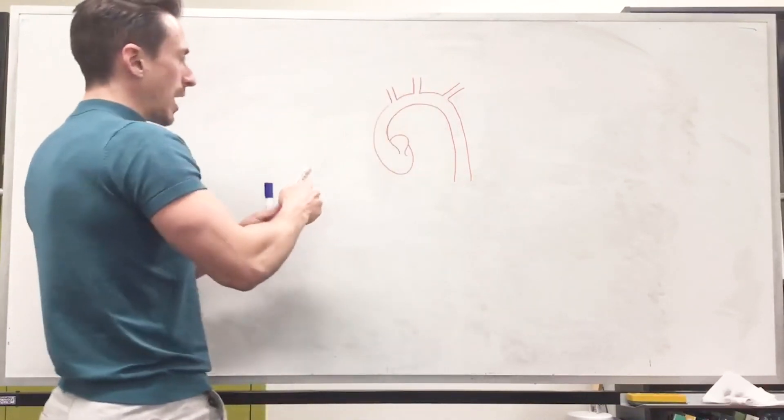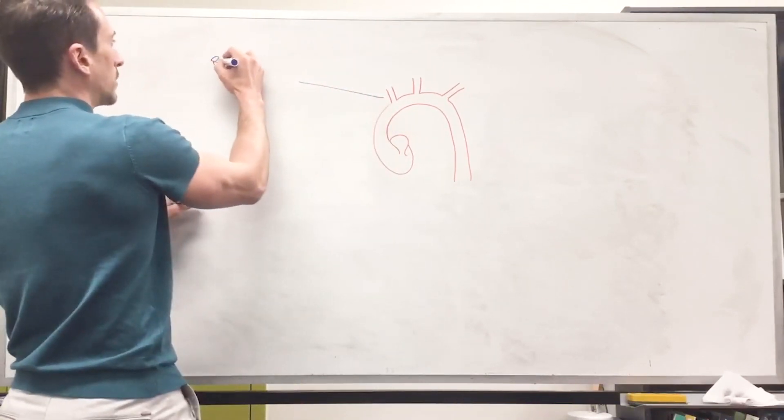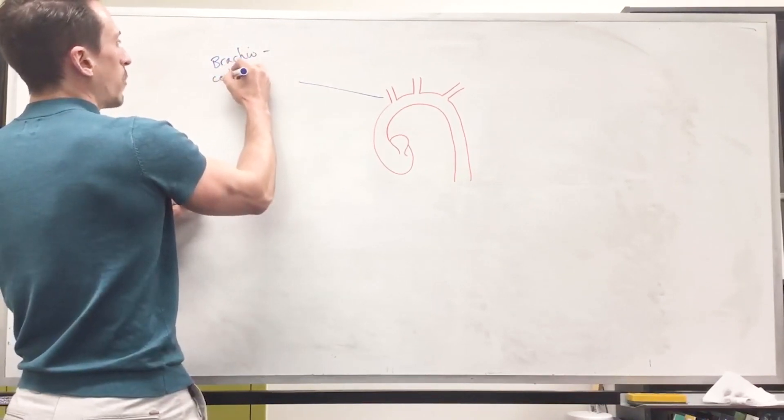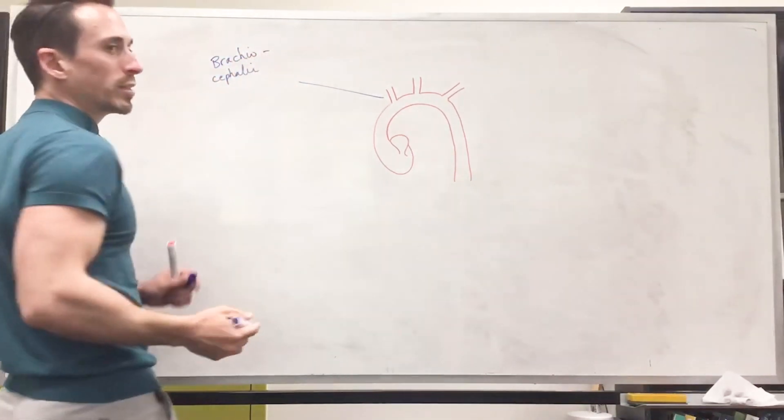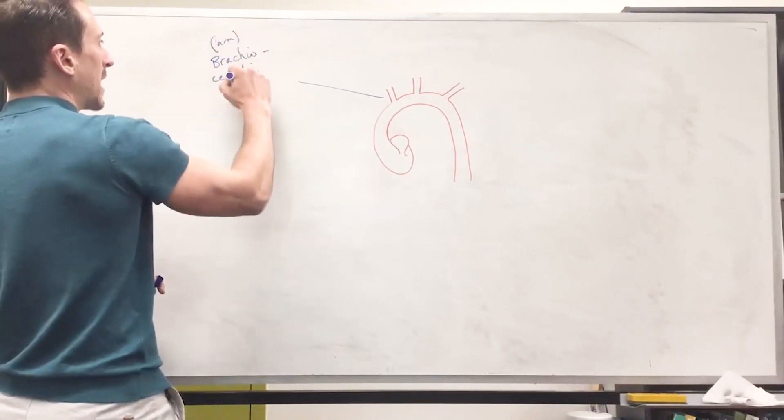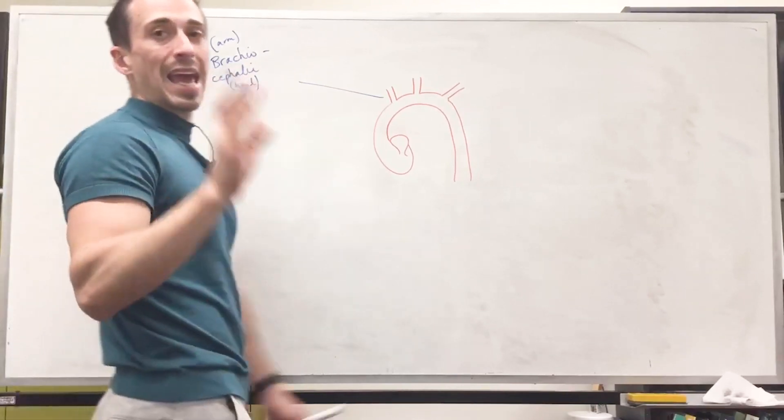These three branches are, this first branch here is what we term the brachiocephalic. Now, the reason why it's called the brachiocephalic, there's two words here, brachio, which means arm, and cephalic, which means head. So this blood vessel is going to go and feed the head and the arm.